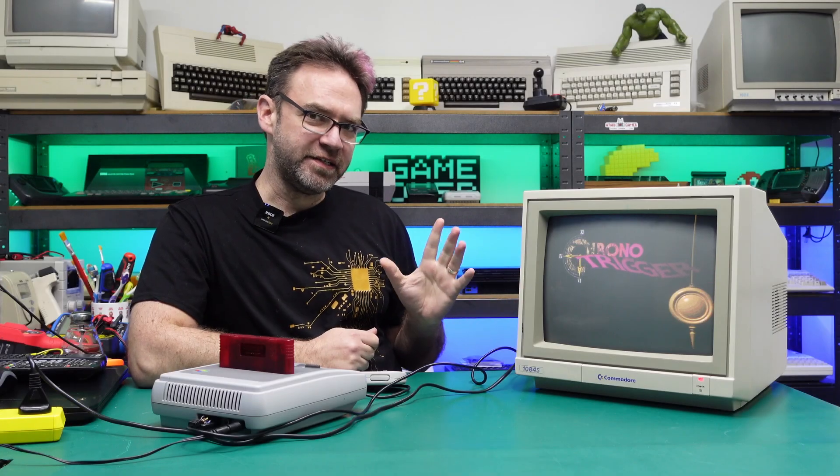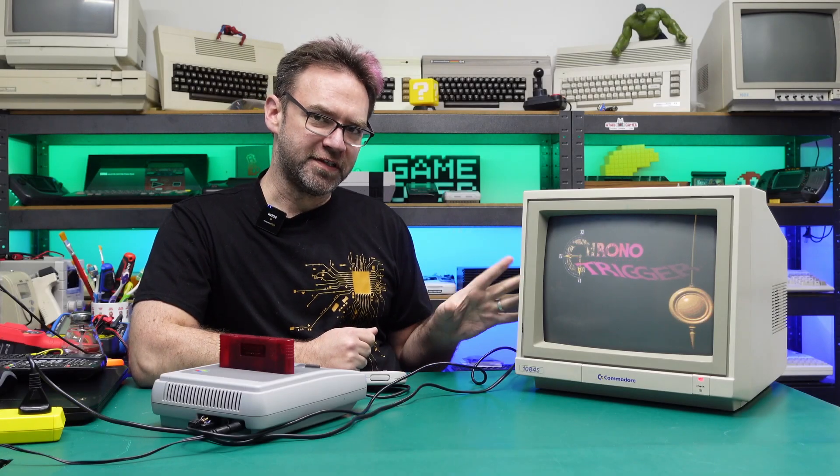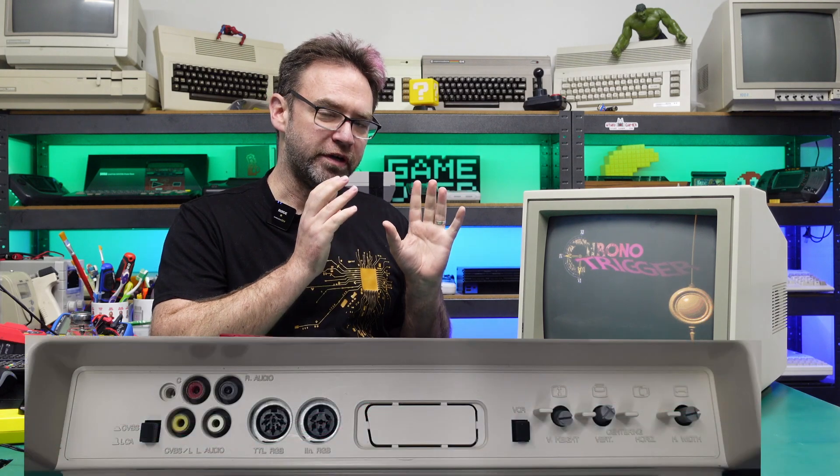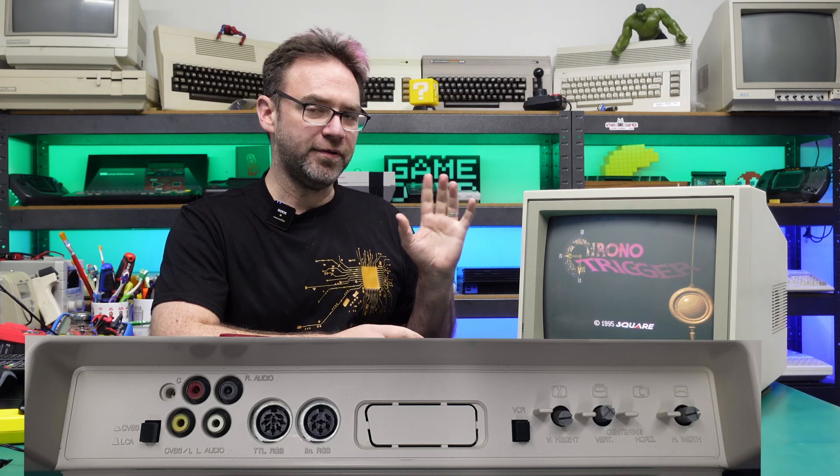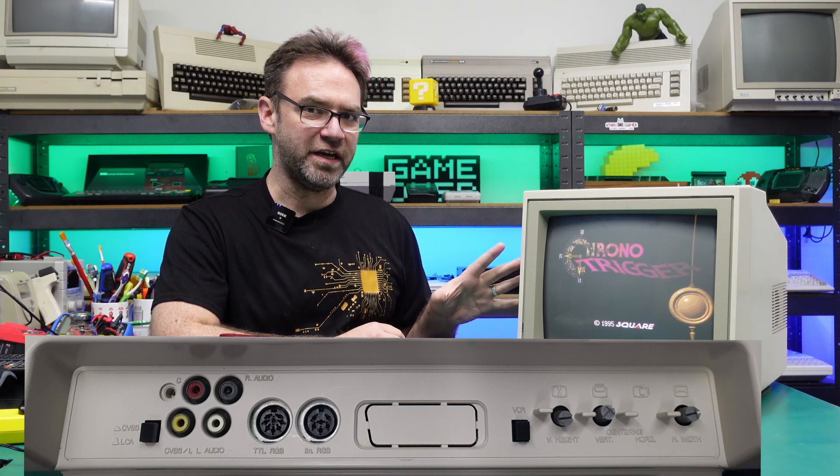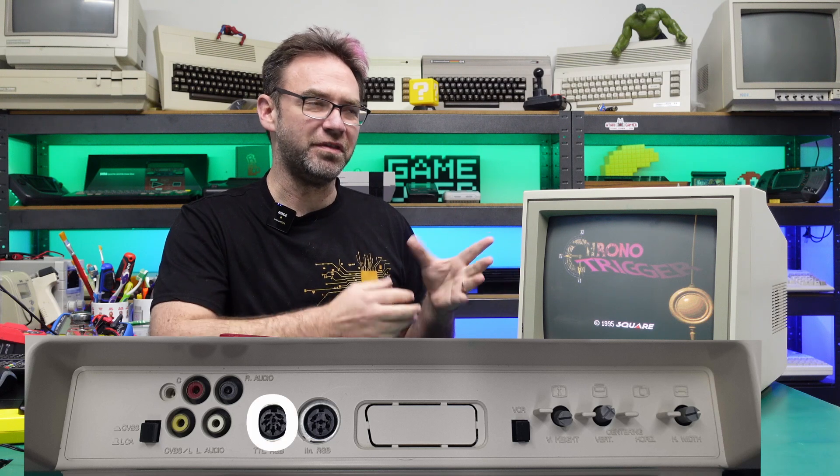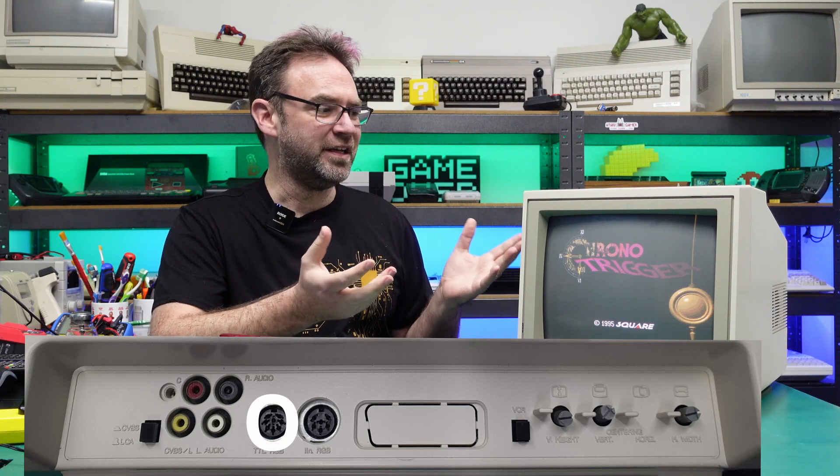The Commodore 1084S is without a doubt a brilliant monitor. Not only does it support a variety of inputs from composite, separate Luma Chroma or S-Video, it also has RGB both in the form of digital RGB, so think CGA style, and it also has analog RGB.